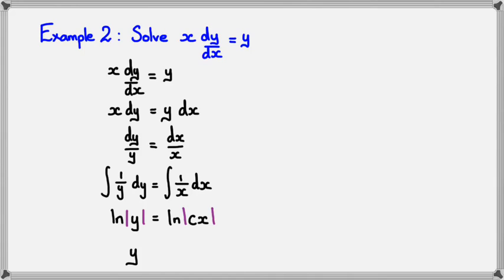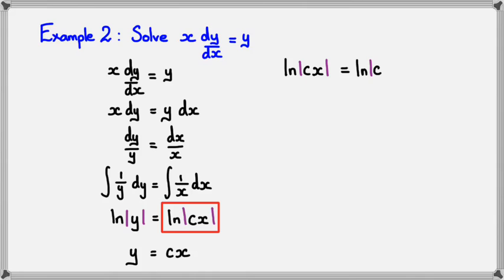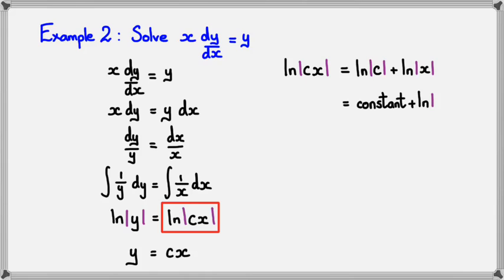Since both sides have ln, we can say y = cx. As for ln(cx), we know it can be written as ln(c) + ln(x). When you integrate you get a constant, and ln(c) is just the ln of that constant. So ln(cx) is simply that constant added to ln(x).